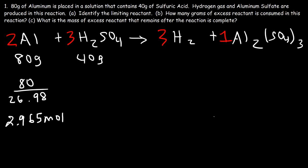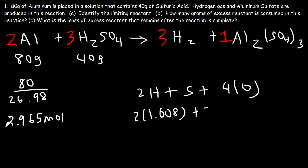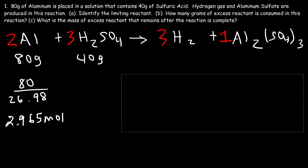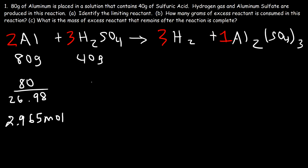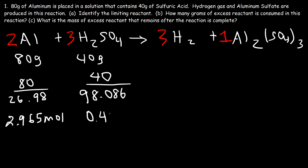Now let's find the molar mass of H₂SO₄. There are two hydrogen atoms, one sulfur atom, and four oxygen atoms. That's 2 × 1.008 for hydrogen, 32.07 for sulfur, and 4 × 16 for oxygen, giving a molar mass of 98.086. Taking 40 grams divided by 98.086 gives us 0.4078 moles of sulfuric acid.